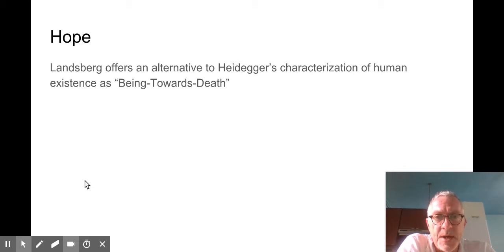Good thing to keep in mind, he does mention Heidegger, and he does take on Heidegger explicitly, is that he is offering an alternative to Heidegger's characterization of human existence as being towards death. Landsberg is offering an alternative philosophy, which he seeks also to ground in human existence, just as Heidegger did, that human existence is not, in its deepest structure, a being towards its own end, towards its own demise, towards its own nothingness, which is what the being towards death idea is.